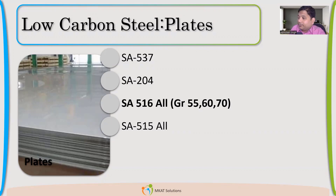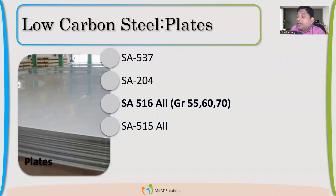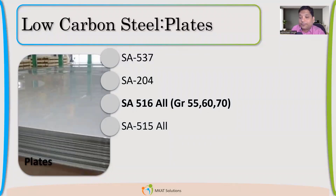Fine grain structure is good for low temperature. That is the reason SA516 performs better when we need impact properties. So in creep applications SA515 will perform better, and in impact applications SA516 will perform better.